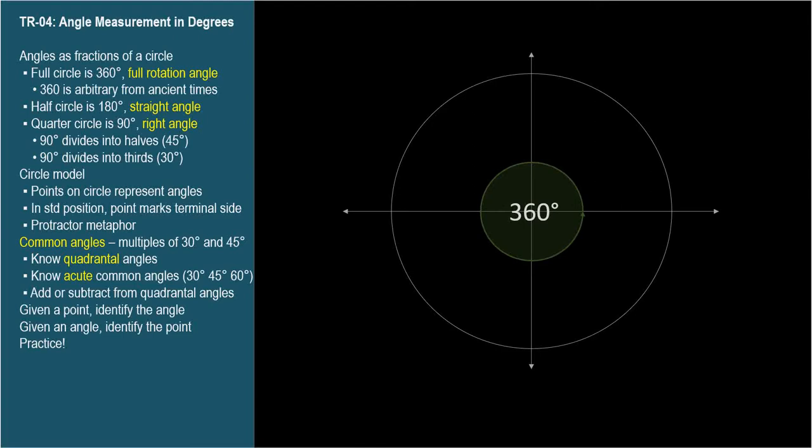Nobody seems to know exactly how it came about, but it seems to be a good choice, since 360 is evenly divisible by so many integers. There are lots of articles and videos available if you have additional interest. In short, it's an arbitrary number, very old, and works pretty well.